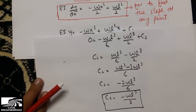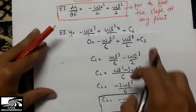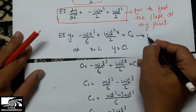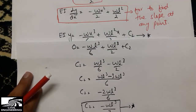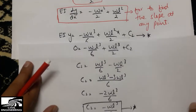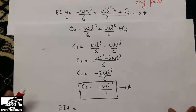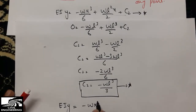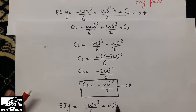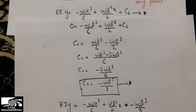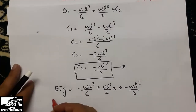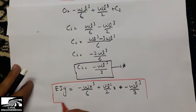Now we put this C2 value back into the equation to get the deflection for the cantilever beam. The equation becomes: EI times y equals minus Wx³ divided by 6, plus WL²x divided by 2, minus WL³ divided by 3. This is the equation to find the deflection at any point along the cantilever beam with a concentrated load at the free end.